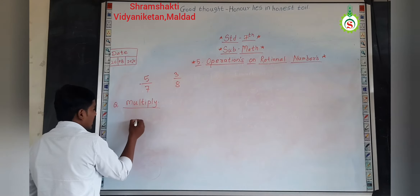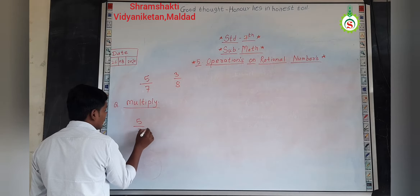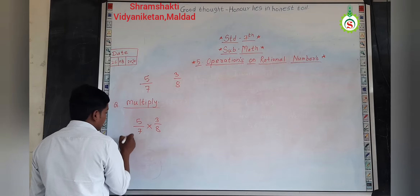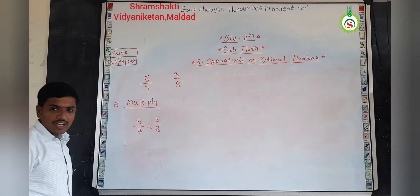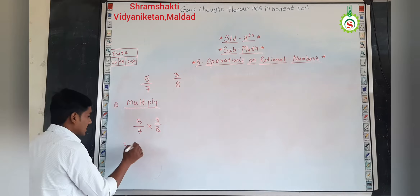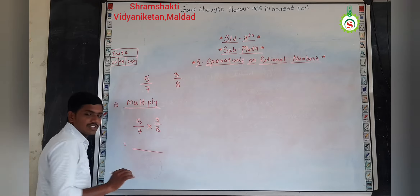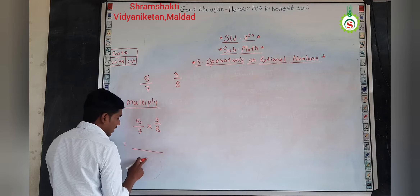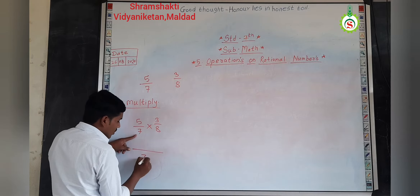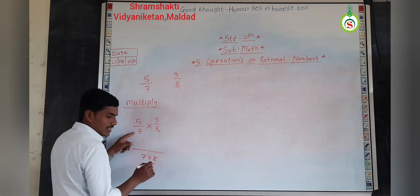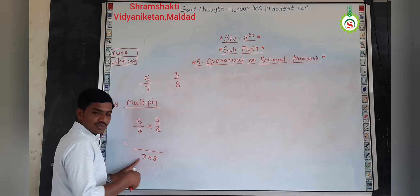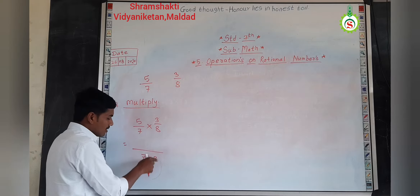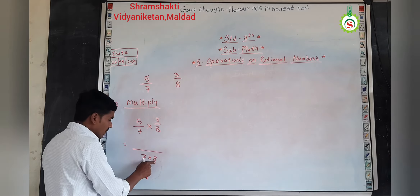So, for the multiplication, I will arrange that first: five by seven, multiply, three by eight. Now, for those two numbers, what I have to do? Multiply. So, for the multiplication, it is a very simple process — multiplication at the numerator and at the denominator. At the numerator, you have to take the multiplication of the numerator. Because, into the addition and subtraction, we have also taken the multiplication of the denominator.